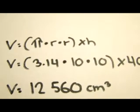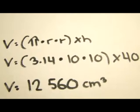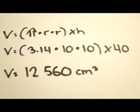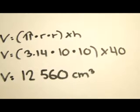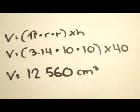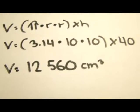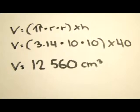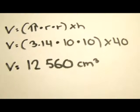Then I used the formula pi r squared times height, so 3.14 times 10 times 10 times the height, which is 40. Then I calculated that and I got 12,560 cubic centimeters.